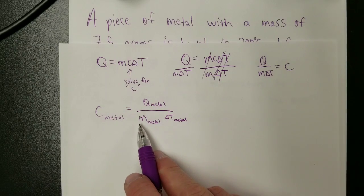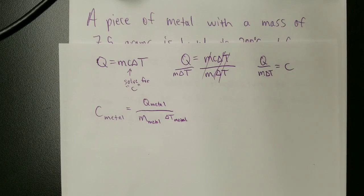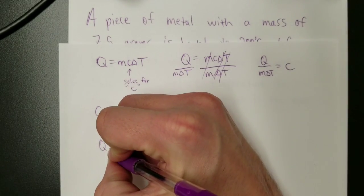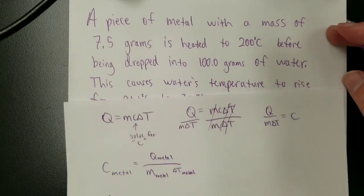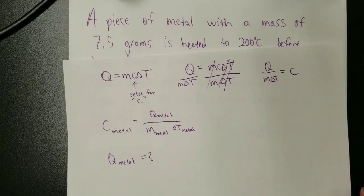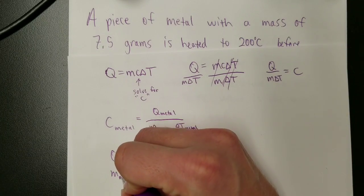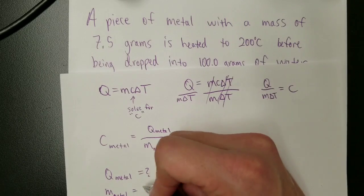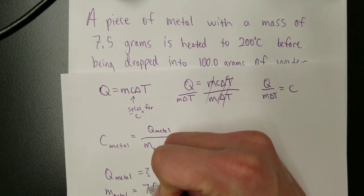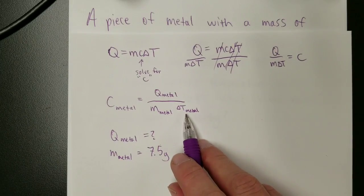So given that need, what we're going to do is say, what do we have? Q of the metal. What's the energy of the metal? Not mentioned anywhere in the question. What's the mass of the metal? Given right there, 7.5 grams.